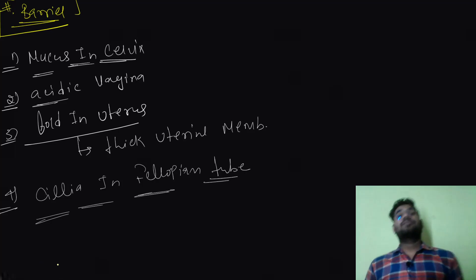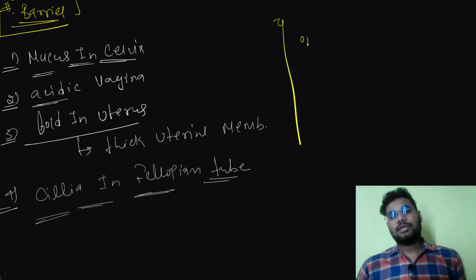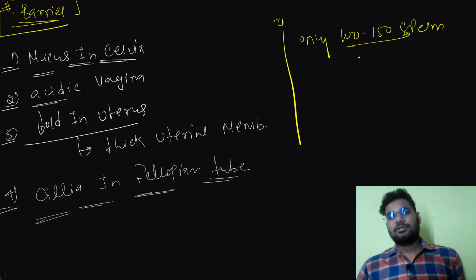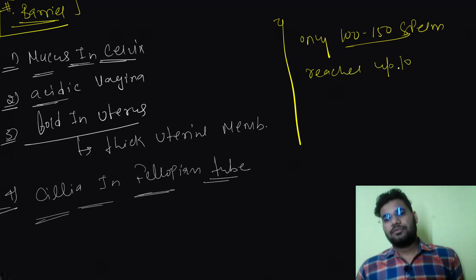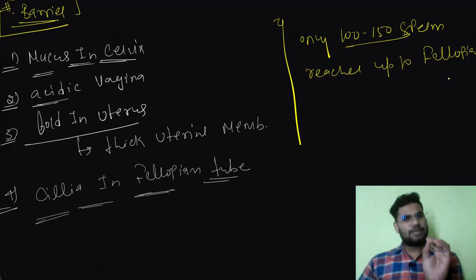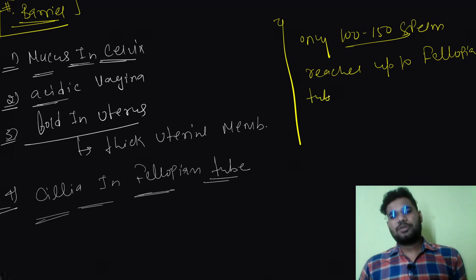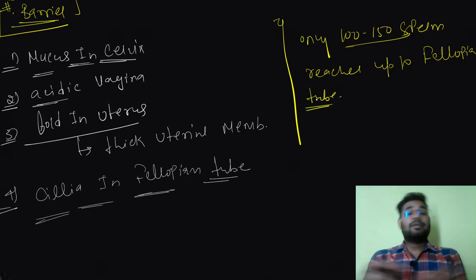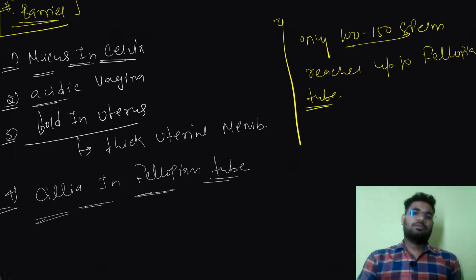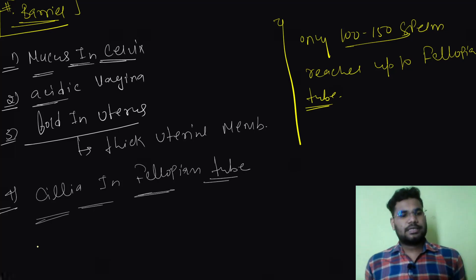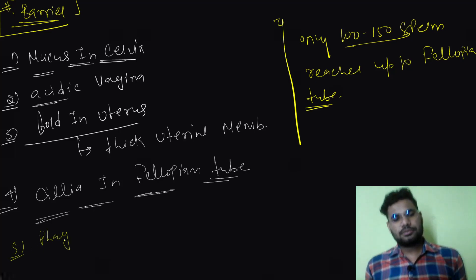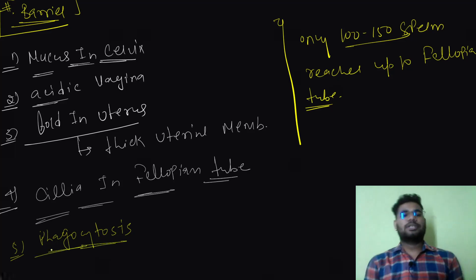Out of 200 to 300 million sperm, only 100 to 150 sperms reach up to the fallopian tube. Many of the sperm die in between; many cannot reach. Some sperm are even phagocytosed — phagocytosis of sperm is reported within the female reproductive tract. So that is why out of 200 to 300 million sperm, only 100 to 150 reach the fallopian tube.